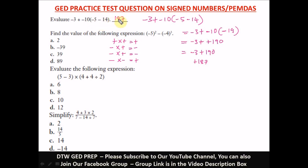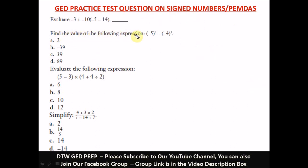This type of question is fill-in-the-blank in your math test with no options — it can be part of your first five questions without a calculator. The next question says: find the value of the following expression — negative 5 raised to the power of 2, minus, in parenthesis, negative 4 raised to the power of 3. Let us expand this: negative 5 squared means negative 5 times negative 5.